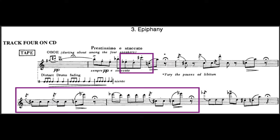Here we have the first two systems of Epiphany. This is a good example of how Bernstein recombines notes from the opening phrase to construct subsequent phrases. In the smaller rectangle, we have four chromatically adjacent tones. These same tones are used for the phrases in the larger rectangle.